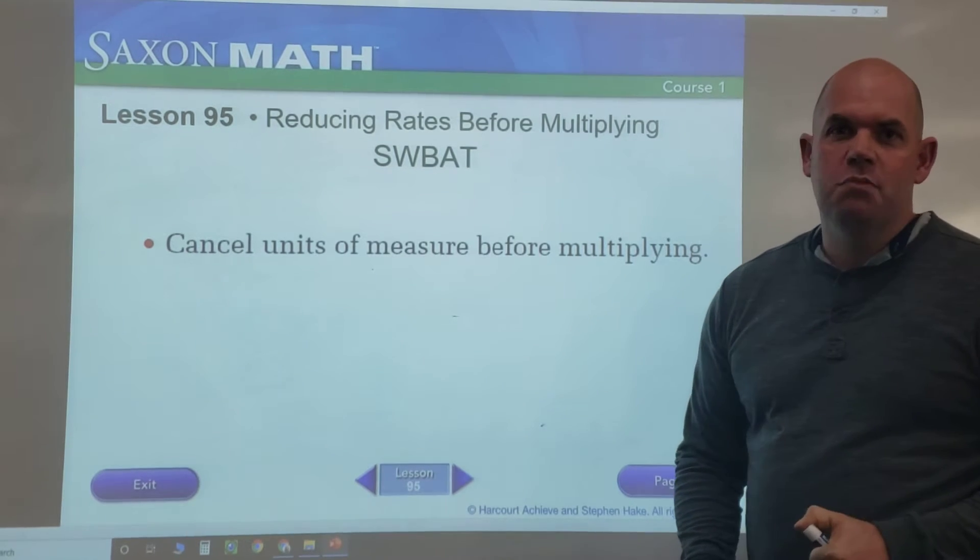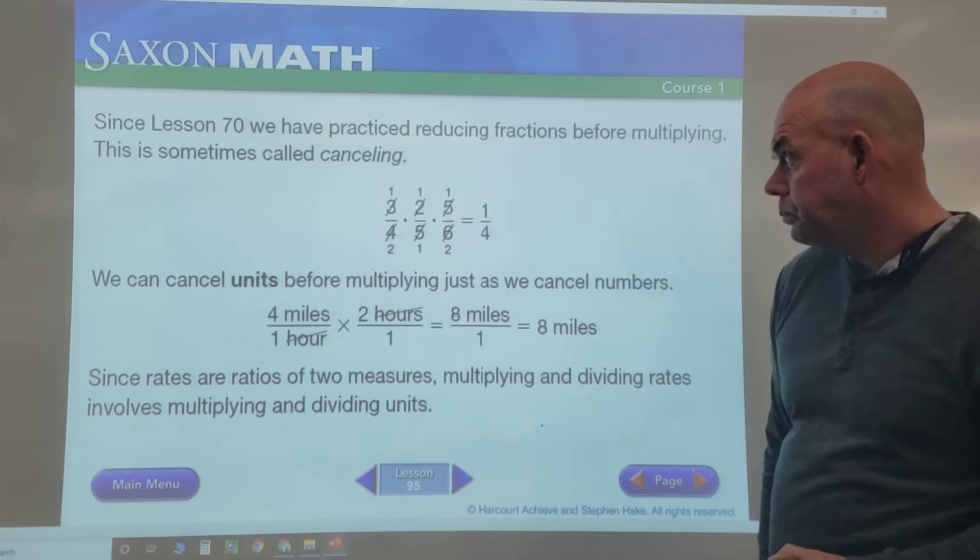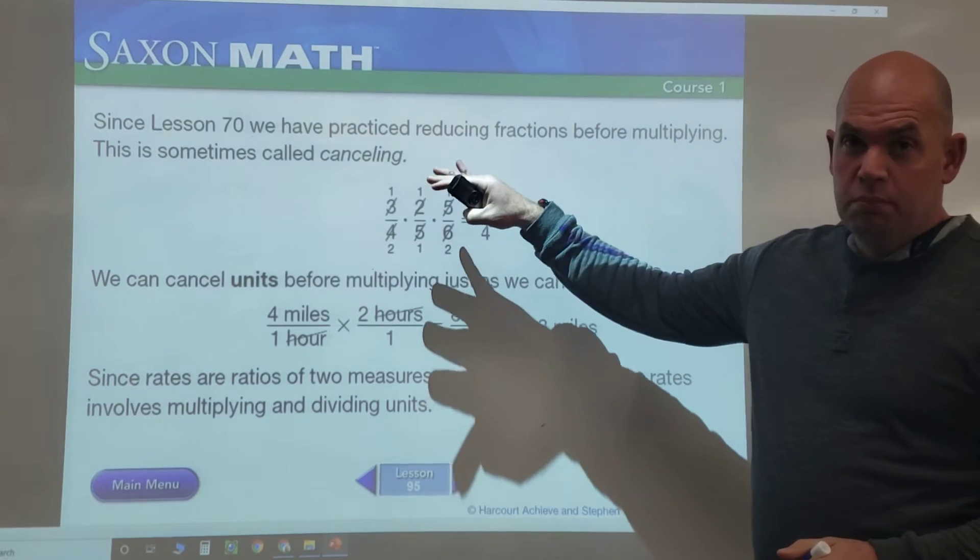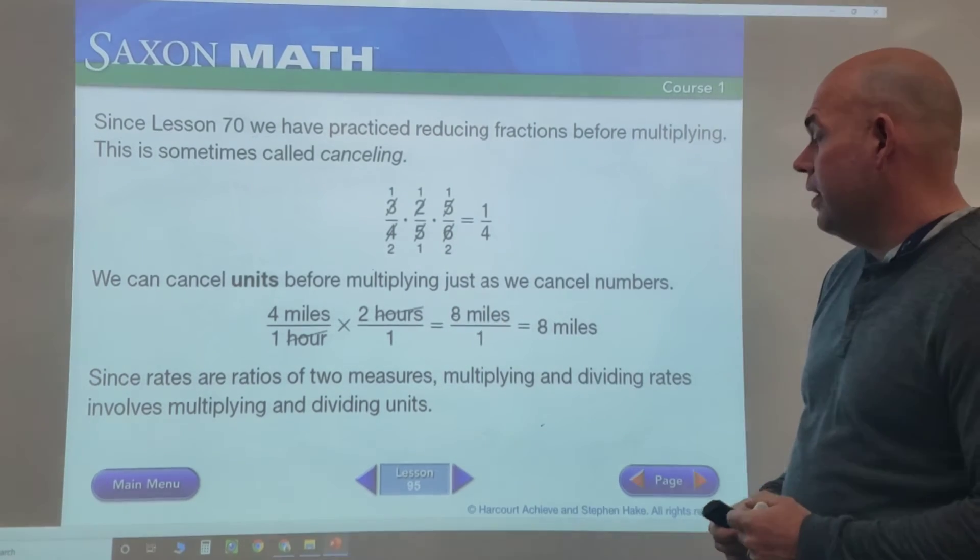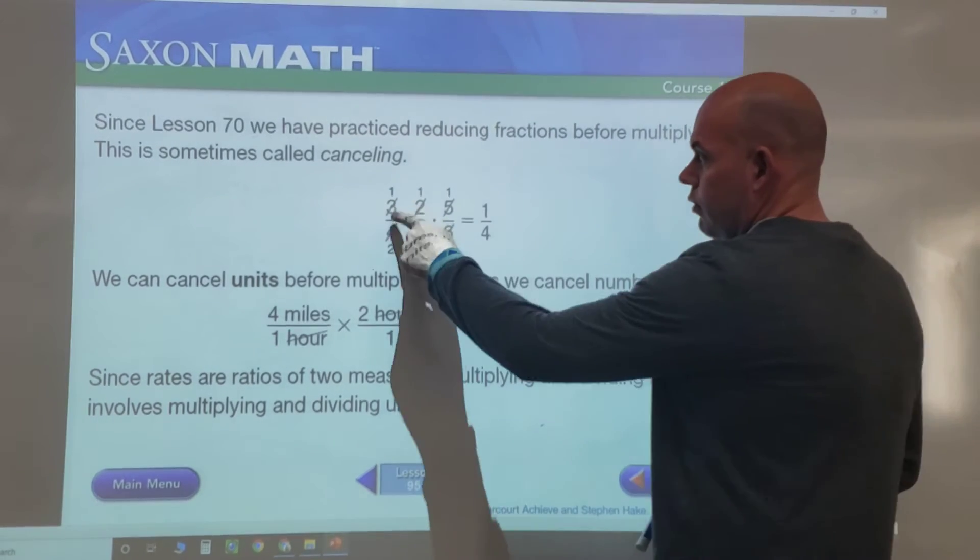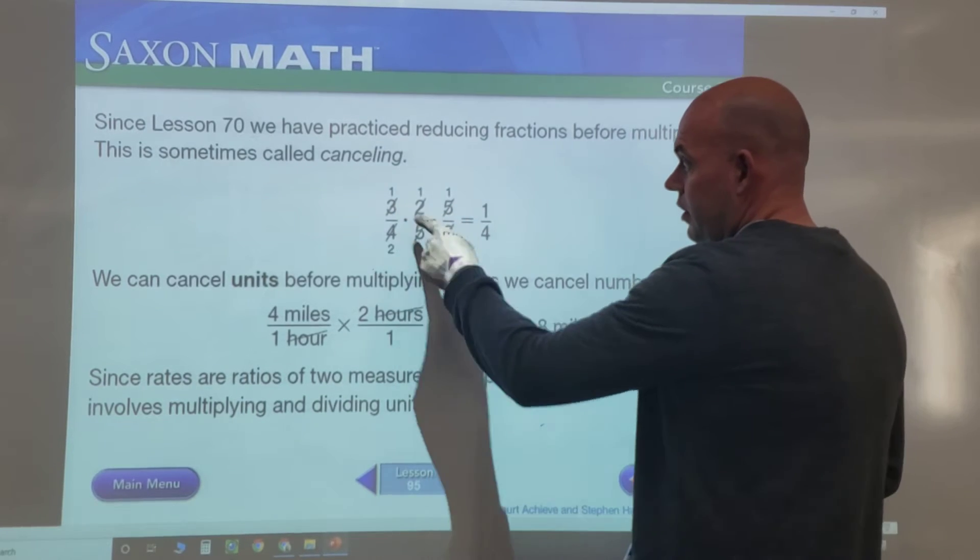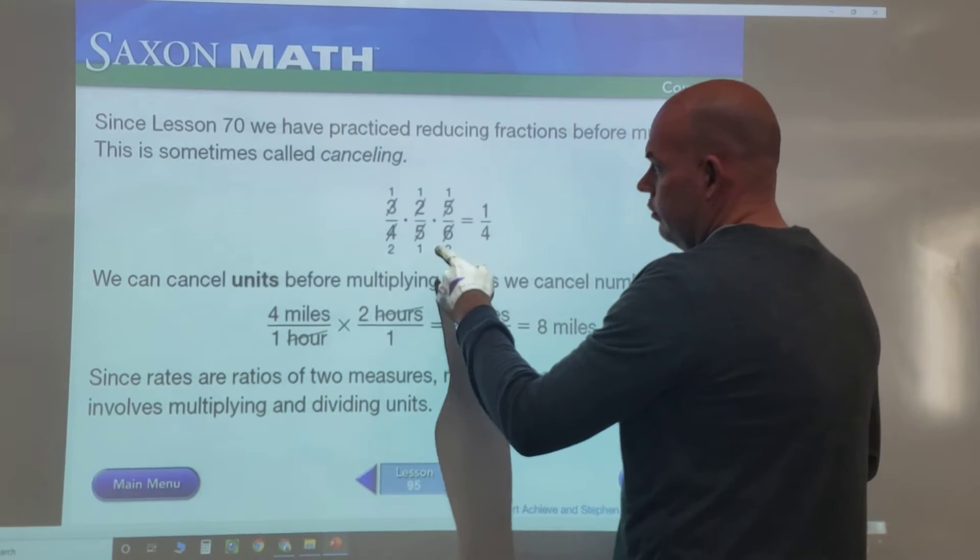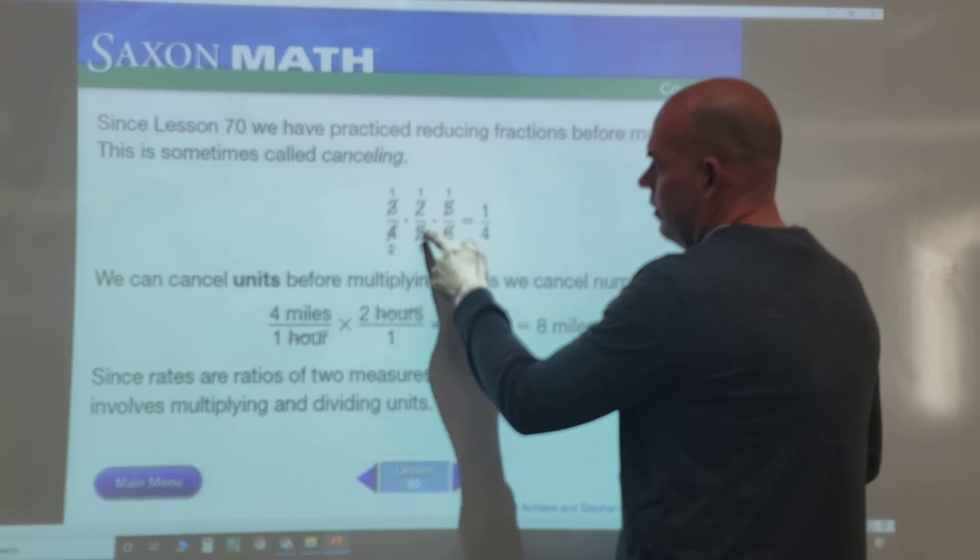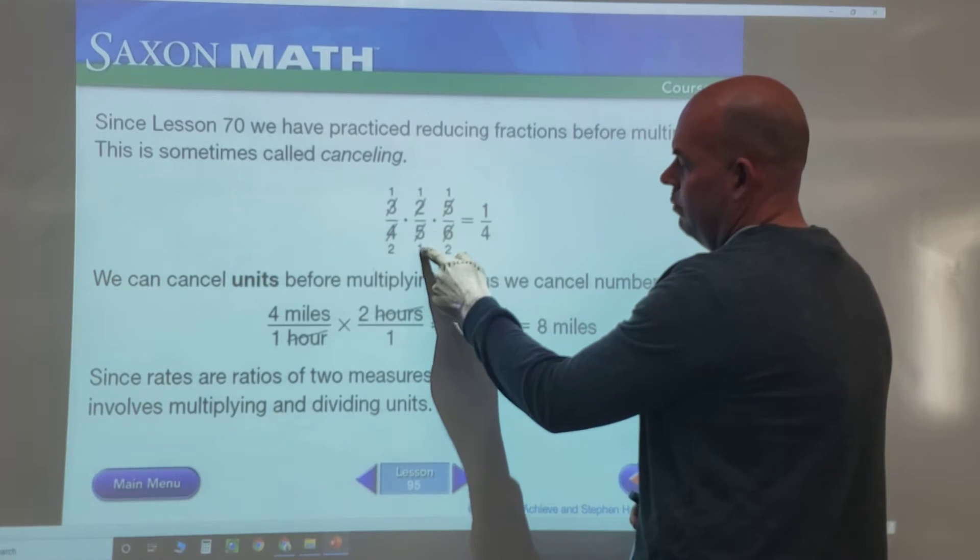Starting in Lesson 70, we started practicing this canceling thing. Where we have 3/4 × 2/5 × 5/6, we look for things that are common factors. We see that five and five here are the same, so we cancel those out and put a one because five divided by five is one.